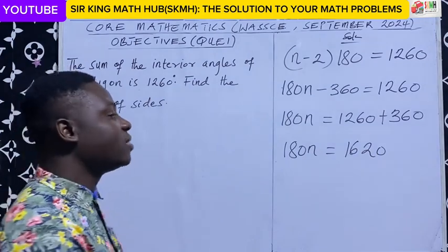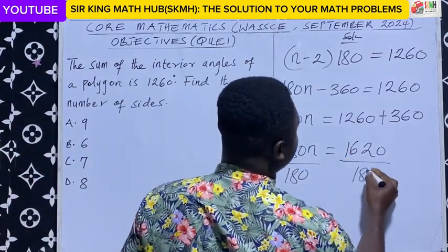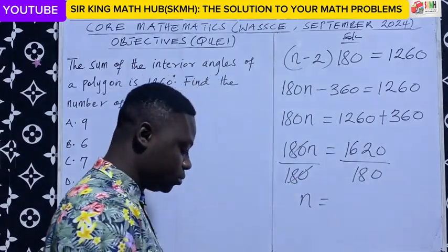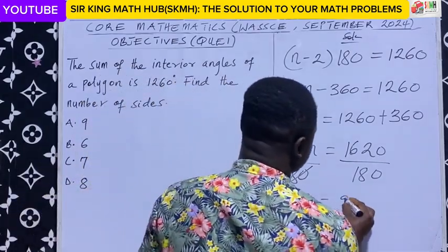We are looking for n, so we can divide both sides by 180. 180 will cancel out, leaving n equals 1,620 divided by 180, which is 9.